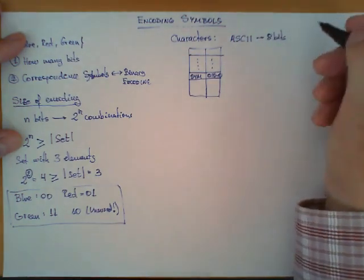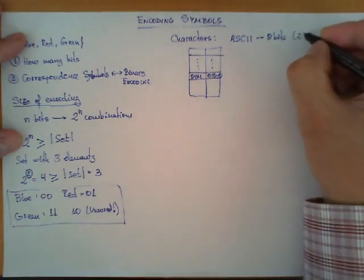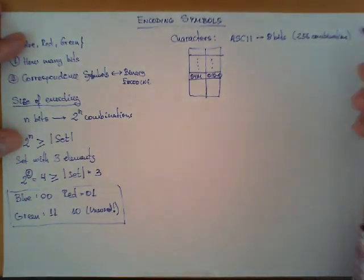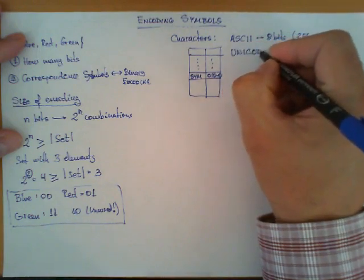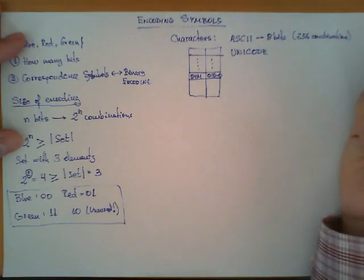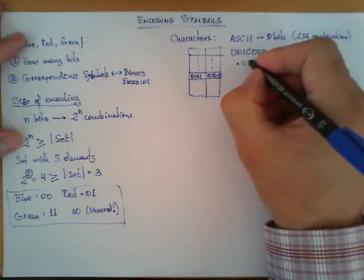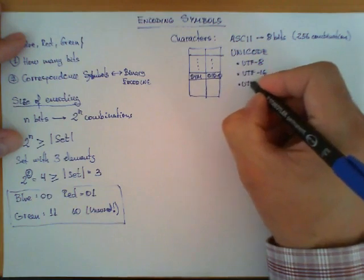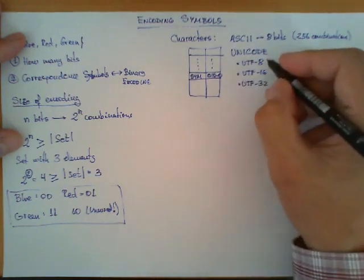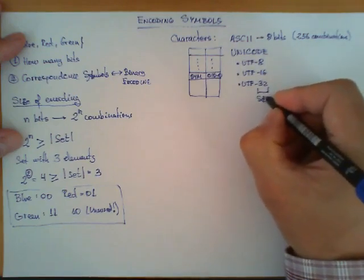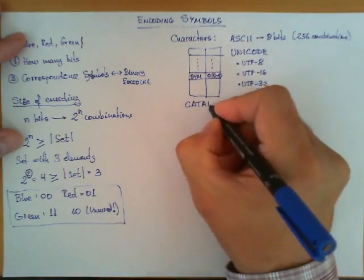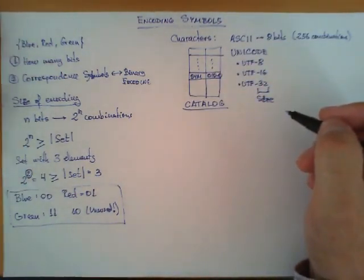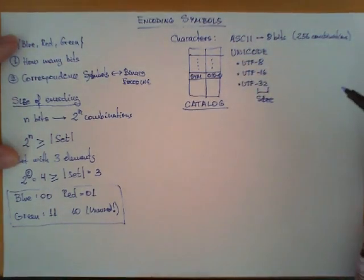A few years ago there was this encoding called ASCII which decided to represent characters by eight bits, first seven and then eight bits. But later, eight bits is not enough because it only allows you to represent 256 combinations. Later, different encodings, precisely another one called Unicode, appeared in order to accommodate all possible symbols of all possible languages on Earth. One is called UTF-8 which uses 8 bits, another one is UTF-16 which uses 16 bits, and another one is UTF-32.